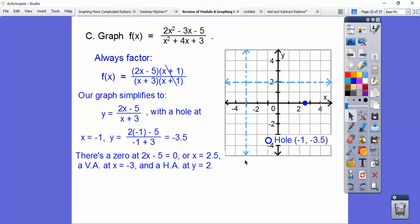And then I get a zero when I set the top equal to zero. So 2x minus 5 equals zero. If we did plus 5, plus 5 and then divide it by 2, we get 2.5. So there's a zero right there.